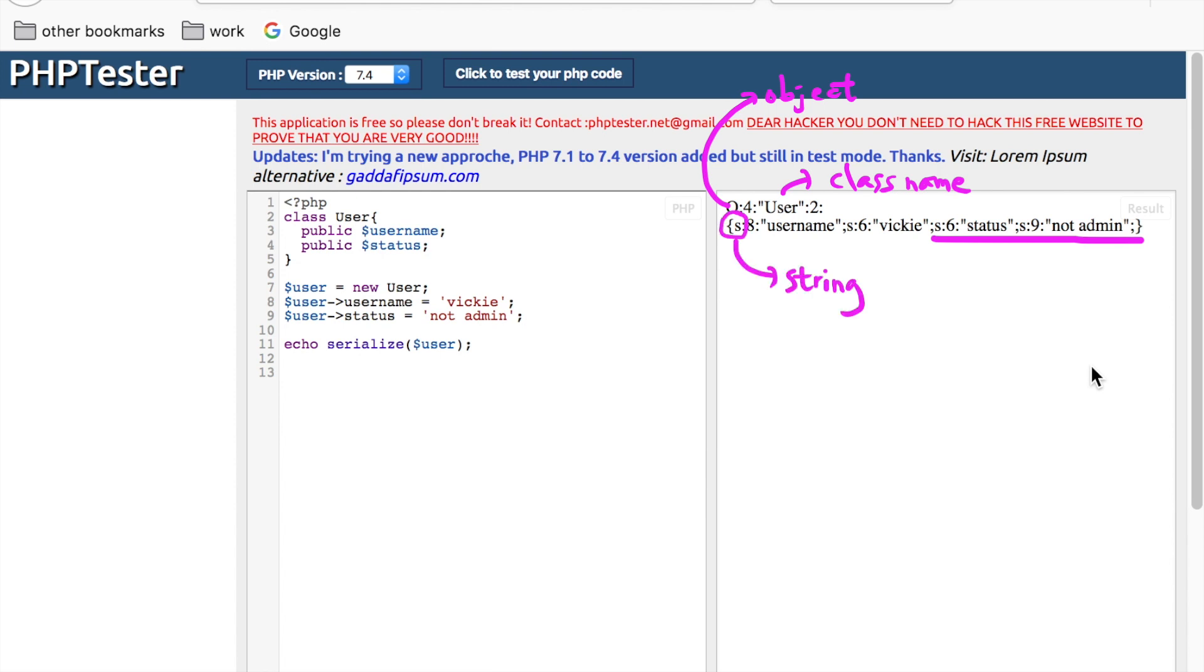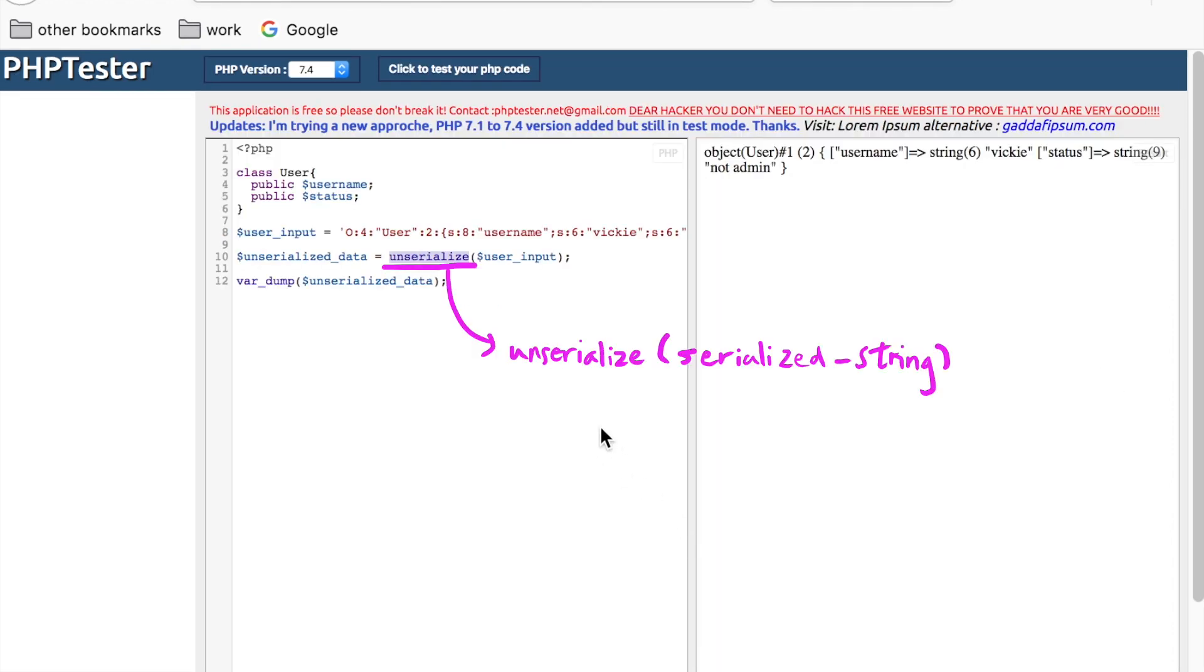When you are ready to operate on the object again, you can deserialize the string with the function unserialize. When an attacker controls a serialized object that is passed into unserialize, they can control the properties of the created program object.